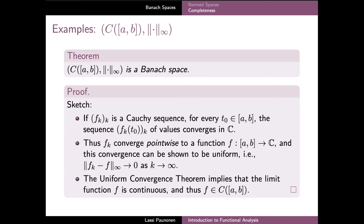Since fn is not a Cauchy sequence with respect to the infinity norm, we cannot use the same reasoning as in the p-norm case to argue incompleteness. In fact, the space of continuous functions on a closed interval equipped with the infinity norm is a Banach space. Roughly speaking, the infinity norm ensures that the natural limit of any Cauchy sequence is always a continuous function.